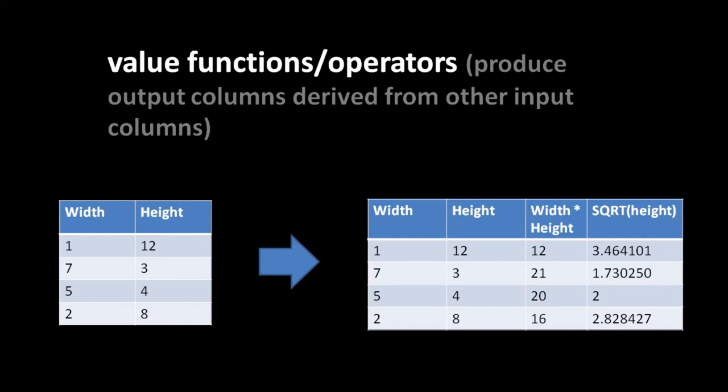Why have the database do this work instead of getting the data and doing operations in your own code? You can do it yourself, but the question is efficiency. Generally, it's better to let the database do as much work as possible because the database is optimized for doing these sorts of operations on large sets of data. Does this always hold true? Probably not - you'll likely find cases where you're better off doing the work outside the database.